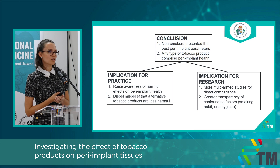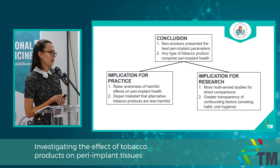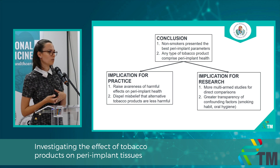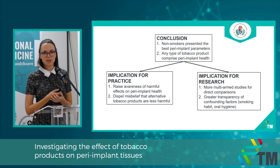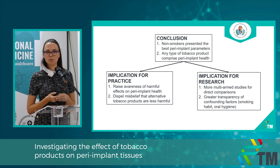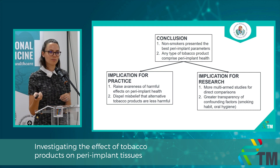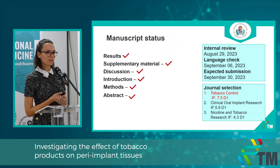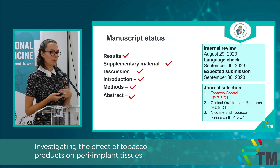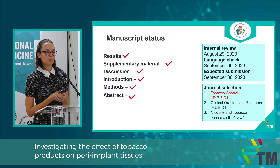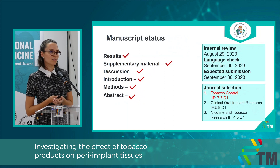For the implication for practice, we should raise awareness of the harmful effects of tobacco products on peri-implant health, and we should dispel the misbelief that alternative tobacco products are not harmful. The implication for research is that we need more multi-arm studies for direct comparisons and greater transparency of confounding factors — for example, smoking habit and oral hygiene. We sent the manuscript to internal review and plan to submit it by September. Our target journal is Tobacco Control, which is a D1 journal in the category of public health.